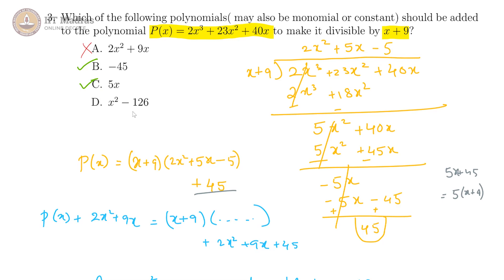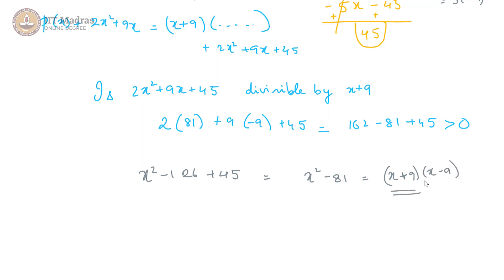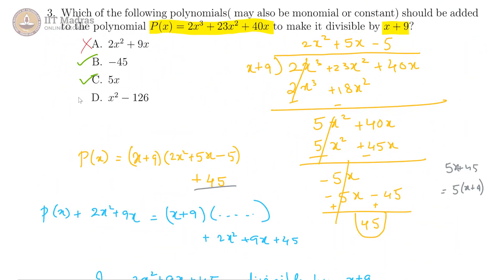What happens if we added x² - 126? Then we would get x² - 126 + 45 as the additional part outside from (x + 9) into that quadratic. This is equal to x² - 81, which is equal to (x + 9)(x - 9). So x plus 9 is dividing this particular polynomial. We can add x² - 126 also and get divisibility by x plus 9.